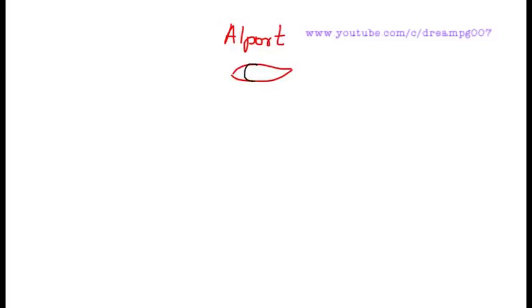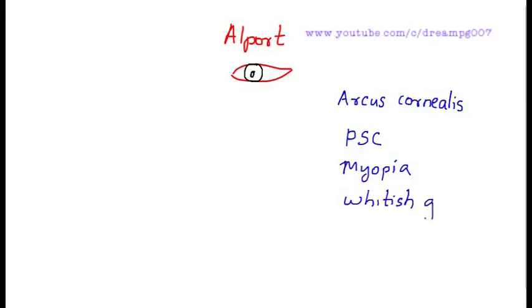Other ocular features seen in Alport syndrome include arcus cornealis, posterior subcapsular cataract, myopia, and whitish-gray dots in the macula.